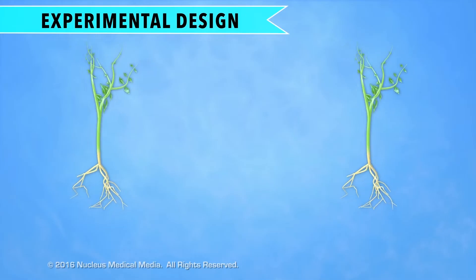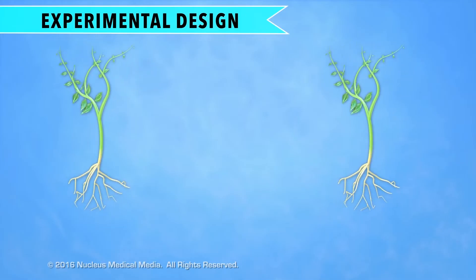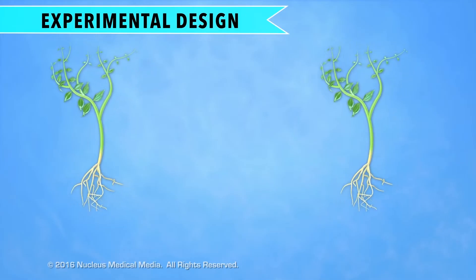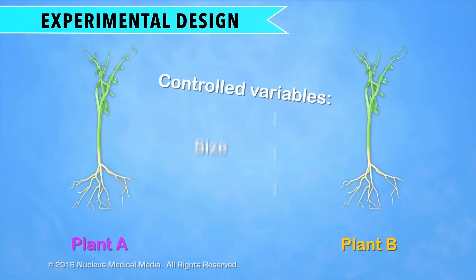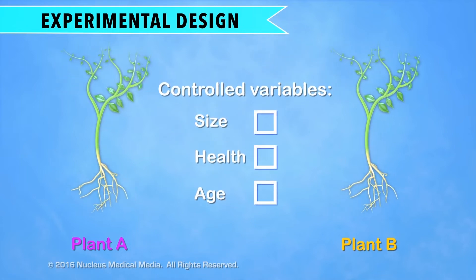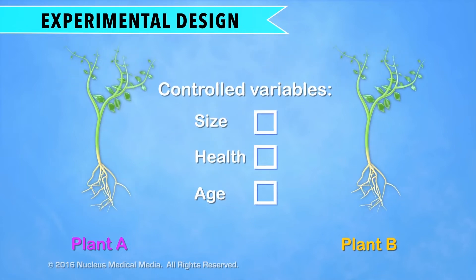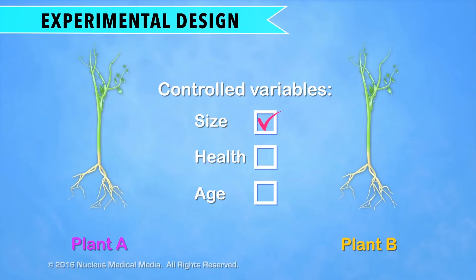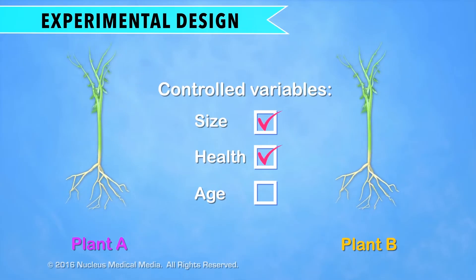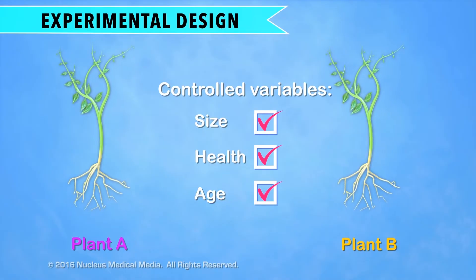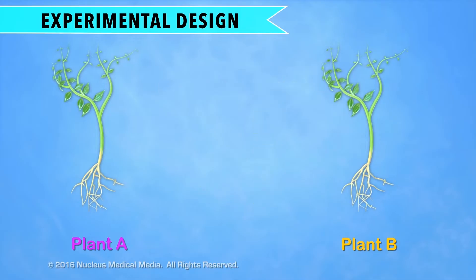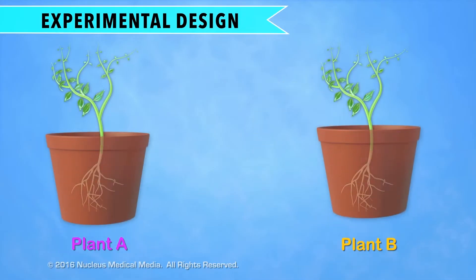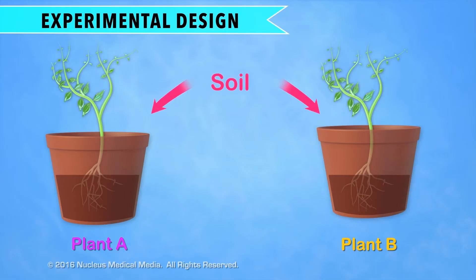First, you would get two plants of the same species — let's call them Plant A and Plant B. Everything about the plants should be exactly the same, including their size, health, and age. Next, you would put each plant in identical pots with the same amount of the same kind of dirt or soil.